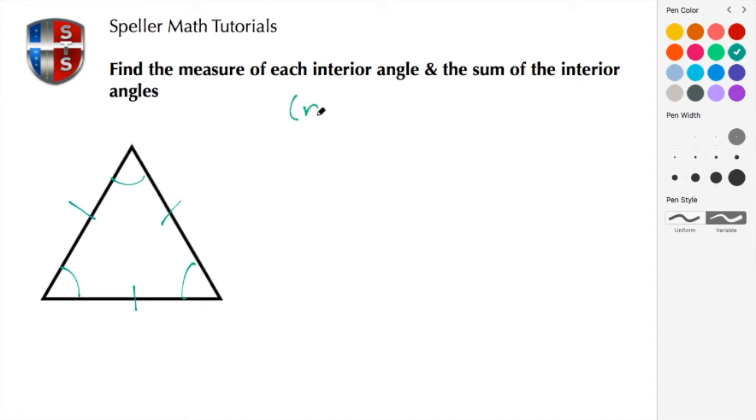That expression is n minus 2 times 180 degrees, where n is the number of sides. We have a triangle so the number of sides is 3. We're going to subtract off 2, then multiply that by 180. Well, 3 minus 2 is 1, and 1 times 180 is just 180. So here we found that the sum of the interior angles is 180 degrees.